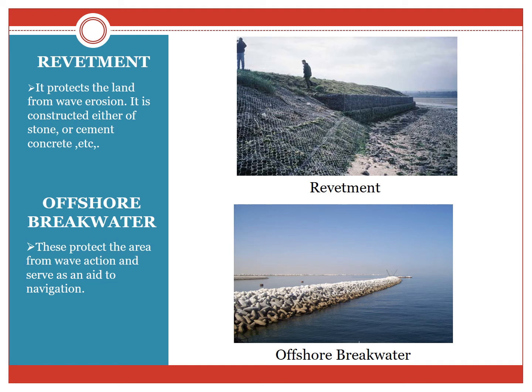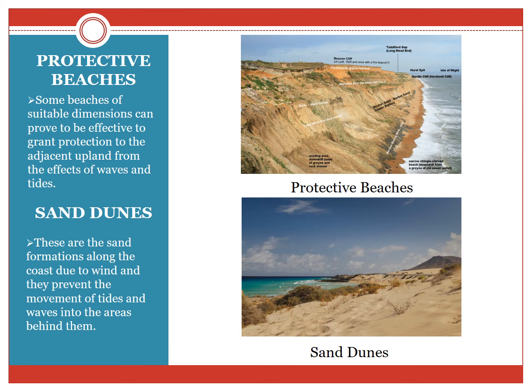Moving across to revetments. As you can see in this figure, it is constructed either of stone or cement and concrete. It protects the land from wave erosion. Offshore breakwater: these protect areas from wave action and serve as an aid to navigation. This figure shows the offshore breakwater. Next are protective beaches — some of suitable dimensions can prove effective in granting protection to adjacent upland from the effects of waves and tides, where the land is well above the height of the incoming natural wave. Next and last are sand dunes. These are sand formations along the coast due to the wind and they prevent the movement of tides and waves in the areas behind. Vegetation is used to stabilize the sand.